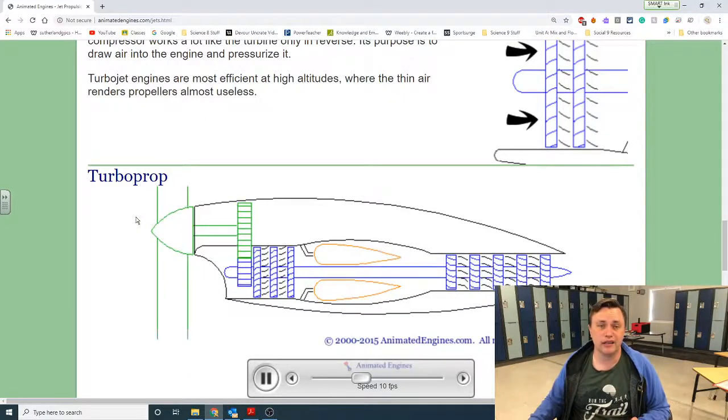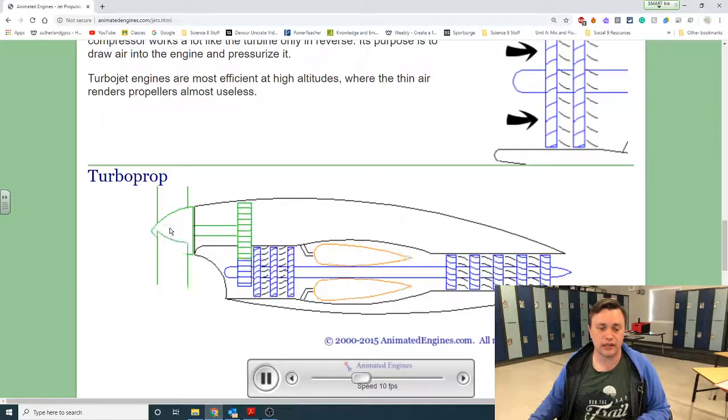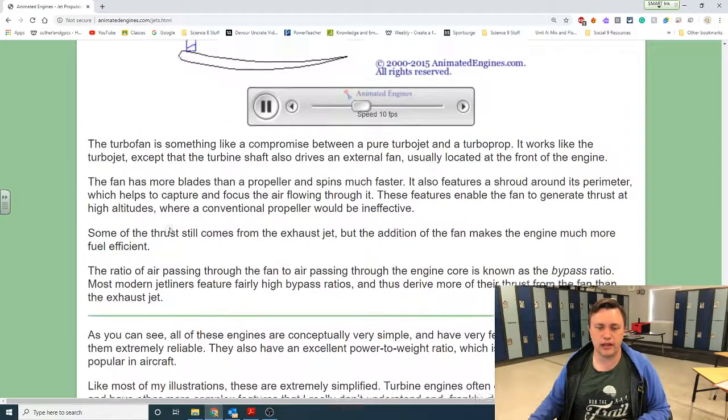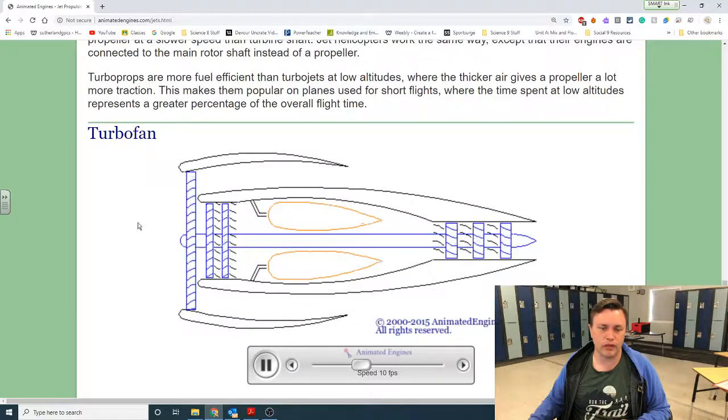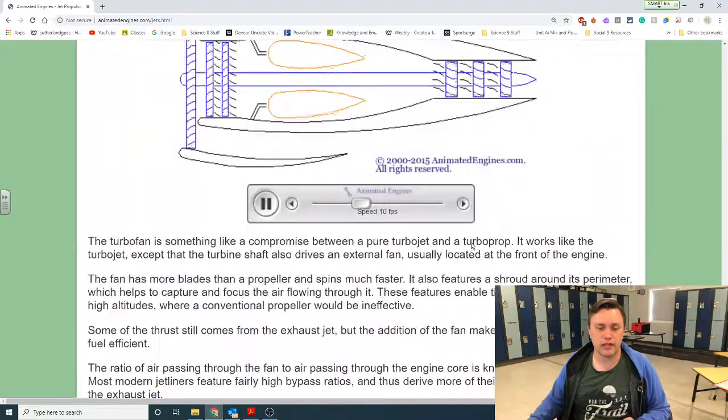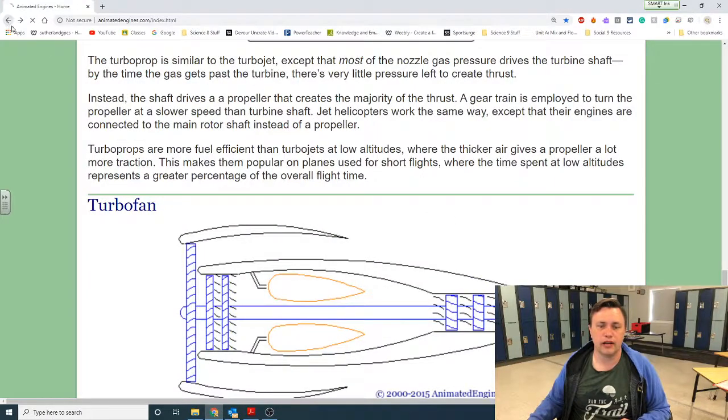There's turbo props. This is the same process just spinning the prop on the front of the plane, like a Cessna that still has a fan blade on the front. Then there's other jet engines like this turbo fan, which is the one you would see on like a 747.